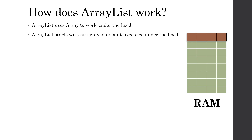When we try to add a new element, we first check whether the array is full or has space available. If there is space, we simply add the new element at the end of the array.